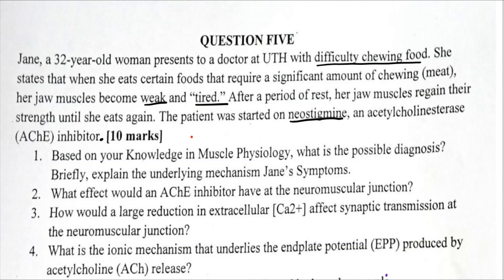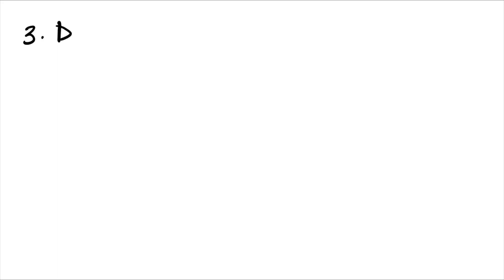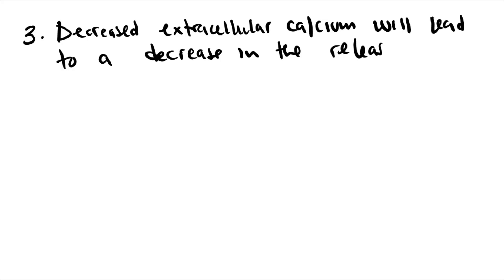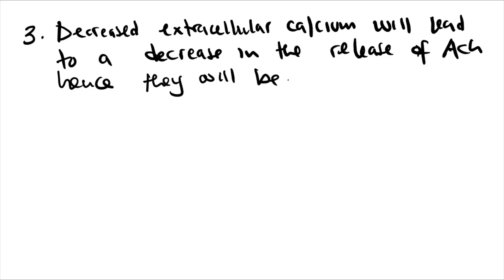Number three: how would a large reduction of extracellular calcium affect synaptic transmission at the neuromuscular junction? Extracellular calcium leads to the release of acetylcholine in the synaptic cleft. Therefore, decreased extracellular calcium will lead to a decrease in the release of acetylcholine, and hence there will be reduced muscle contraction.